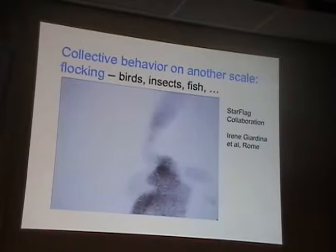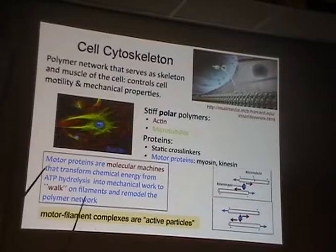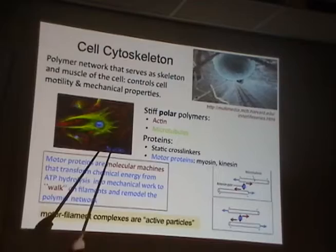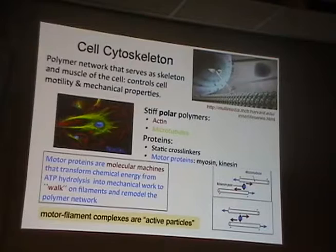Going back to the smaller scale, you find active processes inside the cell. If you look inside the cell, there is a nucleus. The green and red filaments are biofilaments — red is actin, green are microtubules — that form the cytoskeleton, providing structure, controlling the shape of the cell, and controlling most of its mechanical properties.